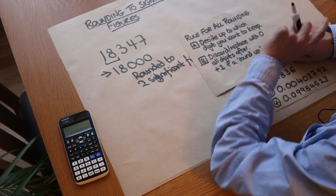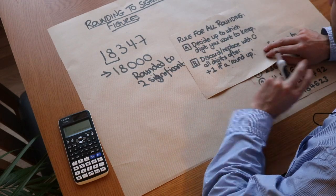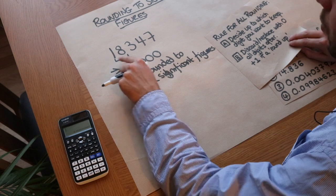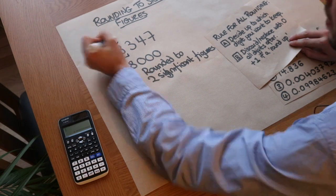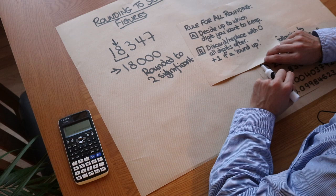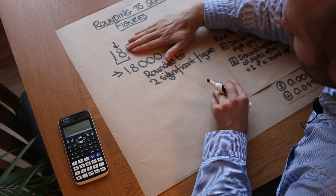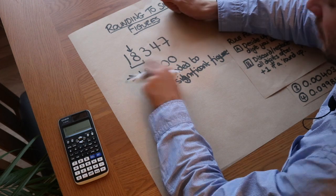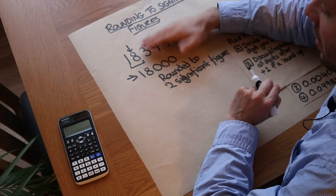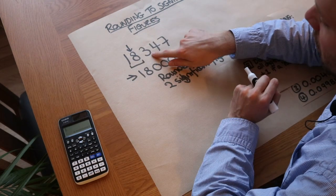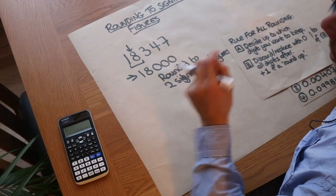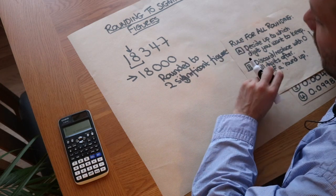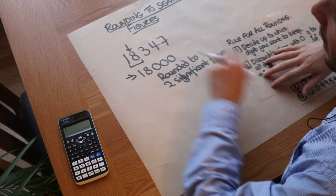Remember that with all rounding — whether it's to the nearest whole number, the nearest 10, or to a certain number of decimal places — you just decide which digit you want to keep up to. With two significant figures, we keep up to the second digit and then discard or replace with zero all digits after. We can't just write 18, because the 8 digit would become the units digit instead of the thousands digit. So we replace them with zero — discarding just means replacing with zero.